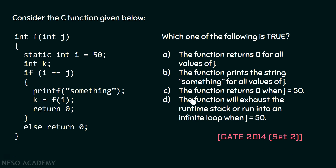Let's dive into the solution. You can straight away eliminate option B, because it says the function prints the string 'something' for all values of j. For j equals 50, this condition is satisfied and it will print the string. But if j is equal to 51 or 52 or some other value, this condition will not be satisfied and it will not print the string. Therefore, this option is incorrect — the function only prints for j equals 50, not for all values of j.